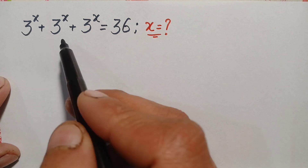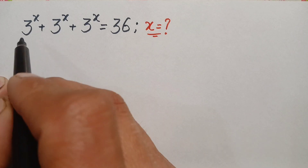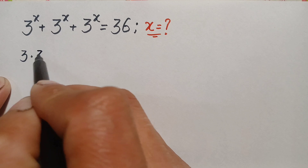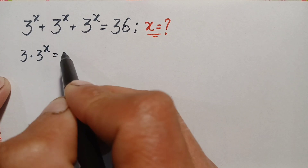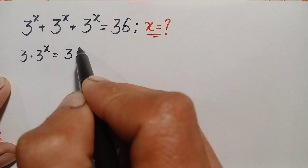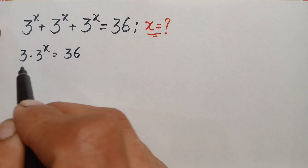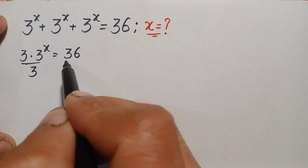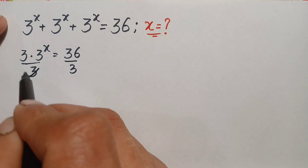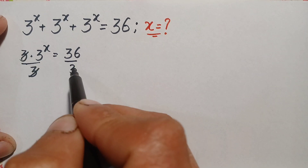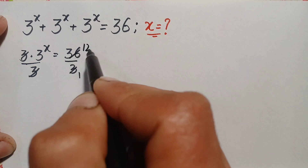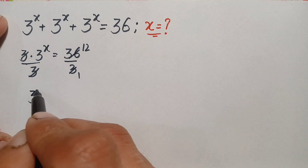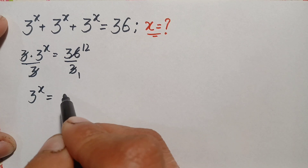Taking 3 to the power x common from the left hand side, we can write this as 3 times 3 to the power x is equal to 36. Since there is a 3 on both sides, we divide both sides by 3 to eliminate it. This 3 cancels, and 36 divided by 3 gives 12, so this becomes 3 to the power x is equal to 12.